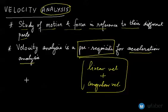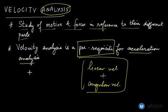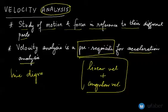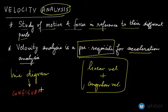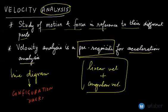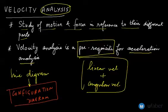To carry out velocity analysis, a machine or mechanism is represented by a line diagram. This line diagram is also known as a configuration diagram. We will look at how to draw it in the velocity analysis section.